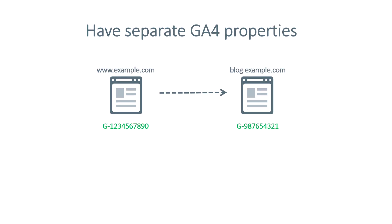We'll start with having two separate properties, because the goal of this particular video is that for each subdomain you will have a separate property. When the visitor goes from one subdomain to another, the data will be separated. The installation of Google Analytics 4 depends on your needs. For example, you can have two separate Google Tag Manager containers — one for each subdomain — and each container would have a separate Google Analytics 4 property installed.